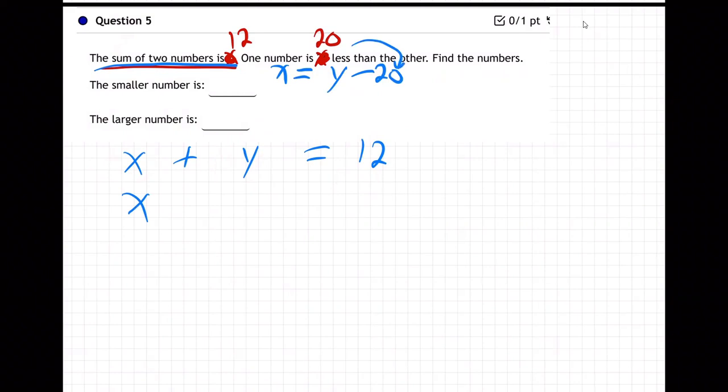So do you see how I directly translated that second sentence? So one number, call it X. You can start with the other one, it doesn't matter. Start with Y, whatever. One number X is, remember is is equals, 20 less. That means 20 is subtracted at the back, than the other.